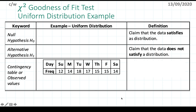A chi-square goodness of fit test is a type of test where you want to see if your data fits a certain distribution. This is different from a normal chi-square test, where the other one tests for whether your two data sets are dependent or independent of each other. For this video, I'm going to look at an example where I want to see if my data fits a uniform distribution.